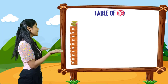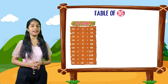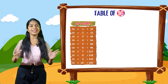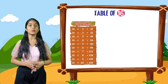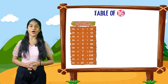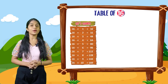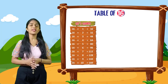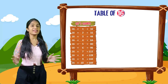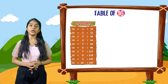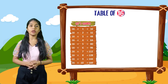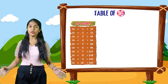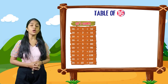So now we will do the table of 16. So let's learn. 16 into 1 is equal to 16. 16 into 2 is equal to 32. 16 into 3 is equal to 48. 16 into 4 is equal to 64. 16 into 5 is equal to 80. 16 into 6 is equal to 96. 16 into 7 is equal to 112. 16 into 8 is equal to 128. 16 into 9 is equal to 144. 16 into 10 is equal to 160.